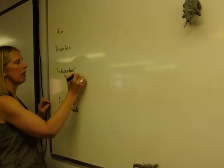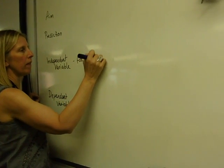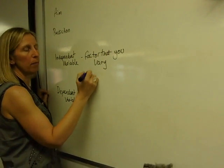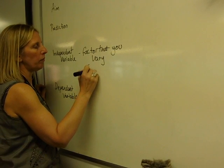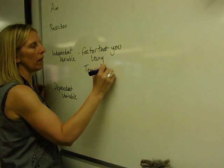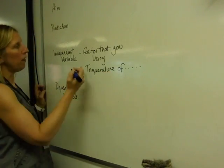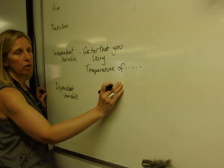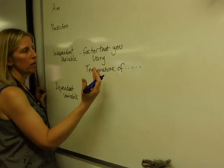So the independent variable is the thing that you vary, the factor that you vary. So it could be the temperature of the enzyme suspension. But it needs to be the temperature of something. Following on from the independent variable, you then put in a range. So you say which temperatures you're going to use, and you need to put five values.